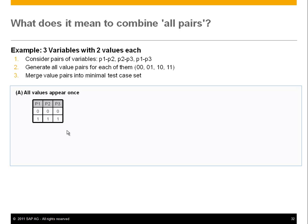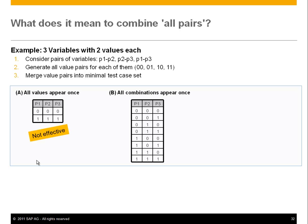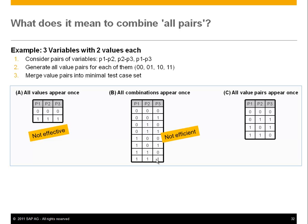Looking at case A: two test cases — all zeros, all ones — where all values appear only once. This is not effective enough. Case B shows full combinatorics: three variables with all value combinations gives 2³ = 8 cases, which is not efficient, especially with more variables like the 576-case example. All pairs strikes a balance between these extremes.